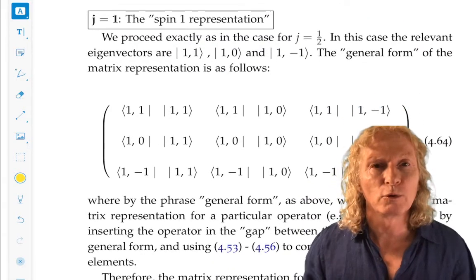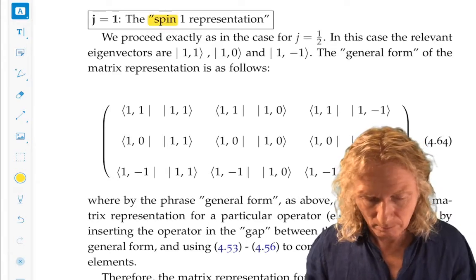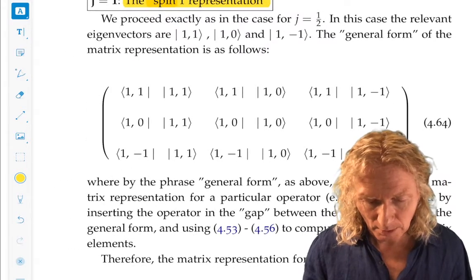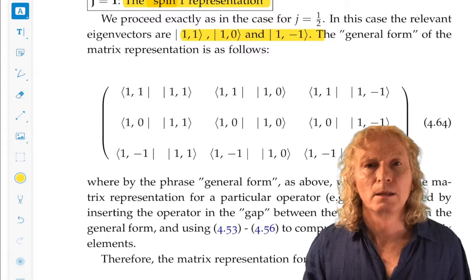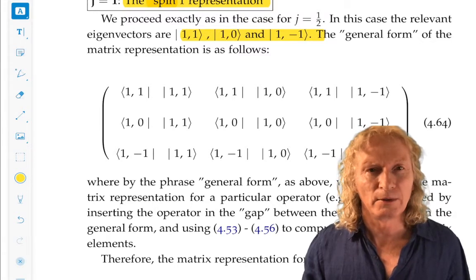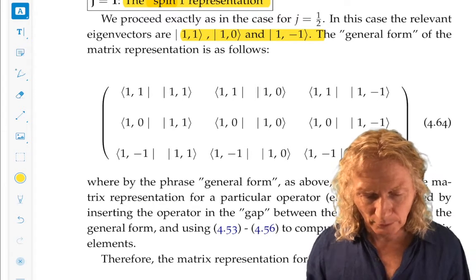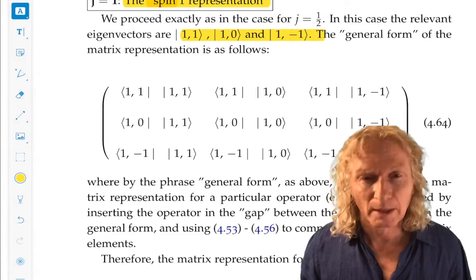What about j equals one? Could this be one representation? Okay, well, that's a three-dimensional basis, three elements in the basis. The first entry is always j, fixed, 1, 1, 1, and 1, 0, minus 1.